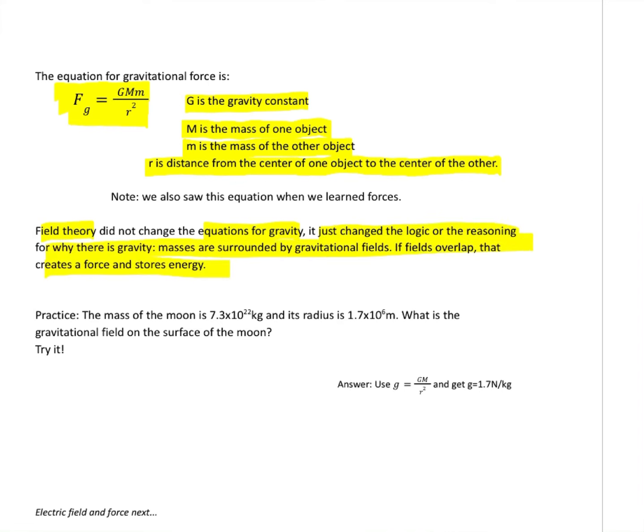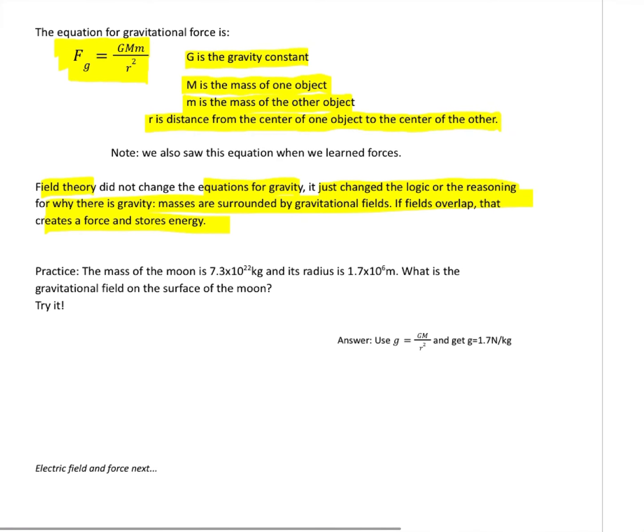If you've got something with mass, it's surrounded by an invisible gravitational field. That's why there's gravity. Gravity and that invisible gravitational field gives you an idea of the direction of the force. If you've got two things with mass and they're close enough together that those two gravitational fields overlap, that means there's going to be a gravitational force between the two things.